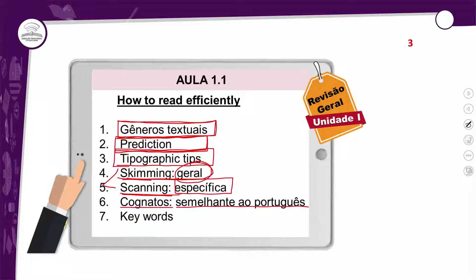Cuidado apenas com os falsos cognatos, que são aquelas palavras que parecem mas não são. Você tem que conhecê-las previamente. E as palavras-chave, que são aquelas palavras que se repetem bastante. Você as encontra nos enunciados, lá nas alternativas, quando elas se repetem bastante. E também se repetem bastante no texto, usando até sinônimos. Ou seja, ao invés de repeti-la o tempo inteiro, o autor escolhe sinônimos para falar sobre aquela palavra. Então, se uma palavra se repete muito no texto, é porque ela tem alguma importância. Essa foi a aula 1.1, bem resumão, porque na sua prova vai ter interpretação de texto. Se liga nessas dicas para a sua interpretação ficar menos complicada.